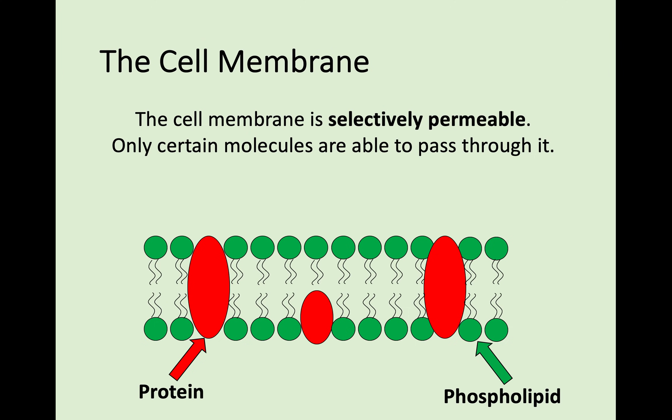You also need to know the structure of the cell membrane. This diagram shows the two molecules that make it up. There are phospholipids, which are the tadpole-like structures, and there are proteins, which are the large blobs dotted along it. You need to know both of these and be able to illustrate them on a diagram.